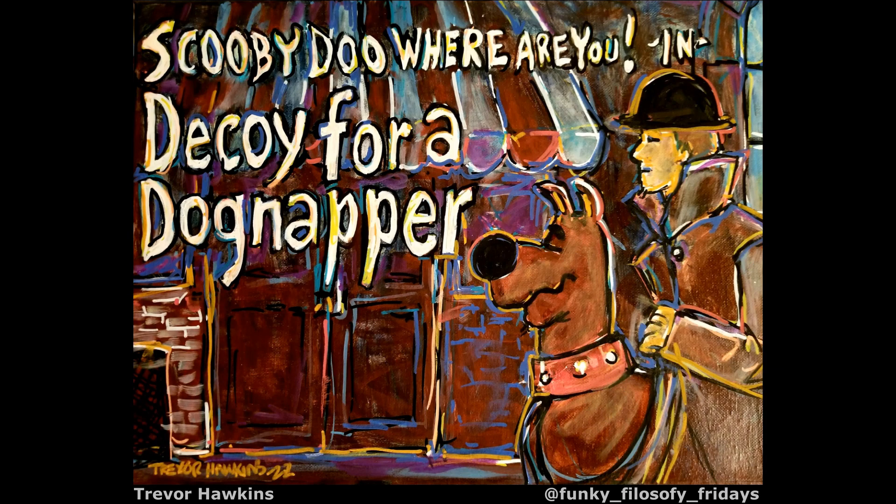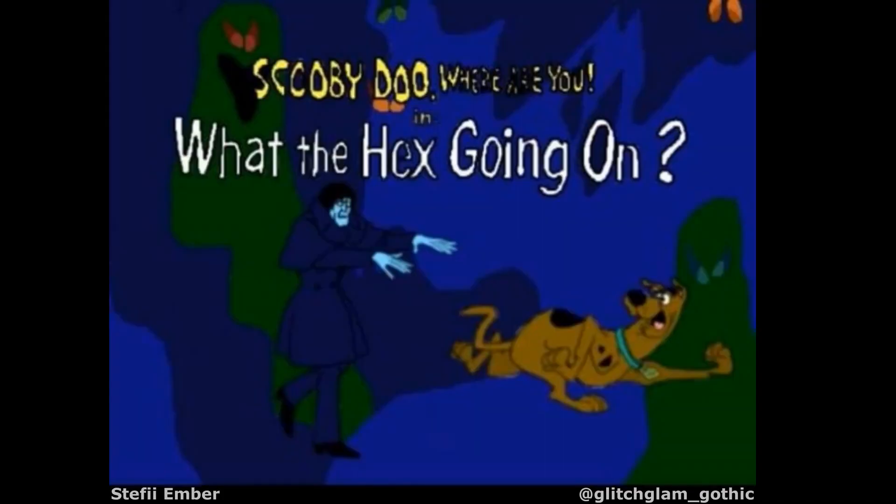Episode 5, Decoy for a Dognapper, originally aired October 11th, 1969. Title card recreated by Trevor Hawkins. Episode 6, What the Heck's Going On? Originally aired October 18th, 1969.